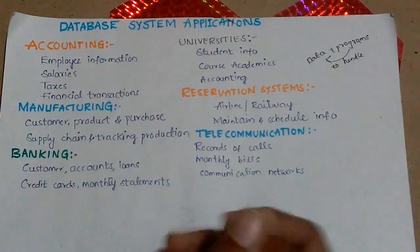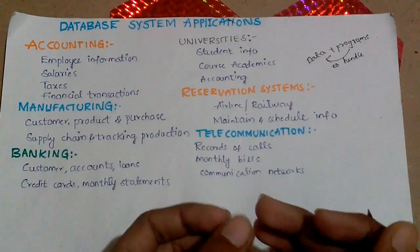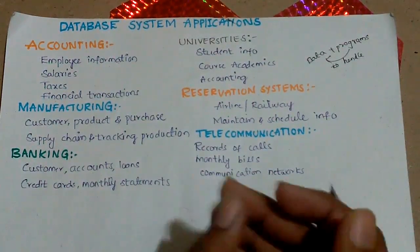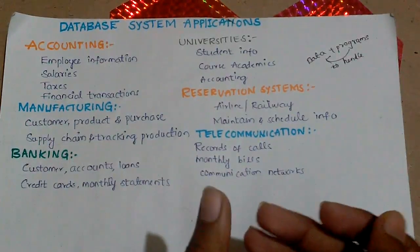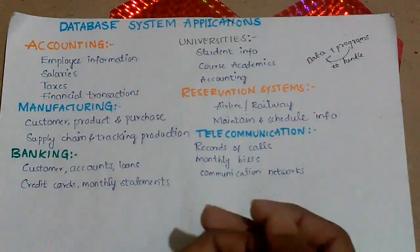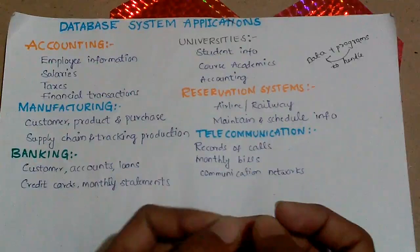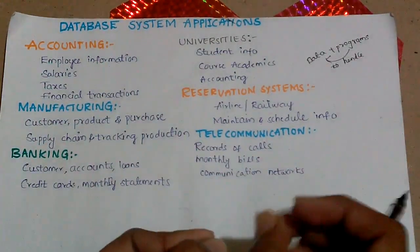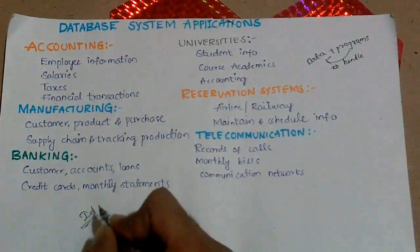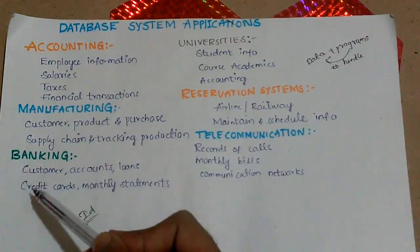In banking too, there are a lot of customers with many accounts. These customers can take loans, purchase credit cards, and the bank has to provide monthly statements to its customers. This involves a very large amount of data. When you want to change some data, it must be reflected in all related concepts — so if you change data associated with a customer's ID, it must be updated across all their accounts.